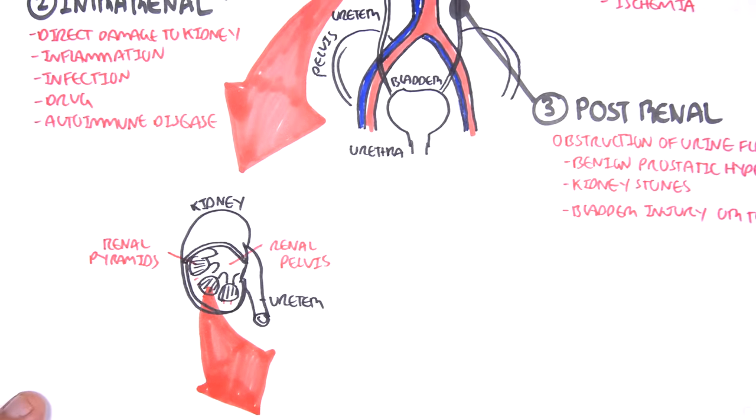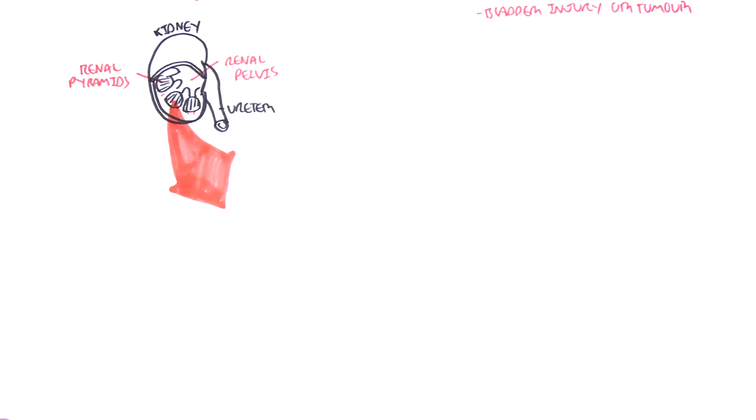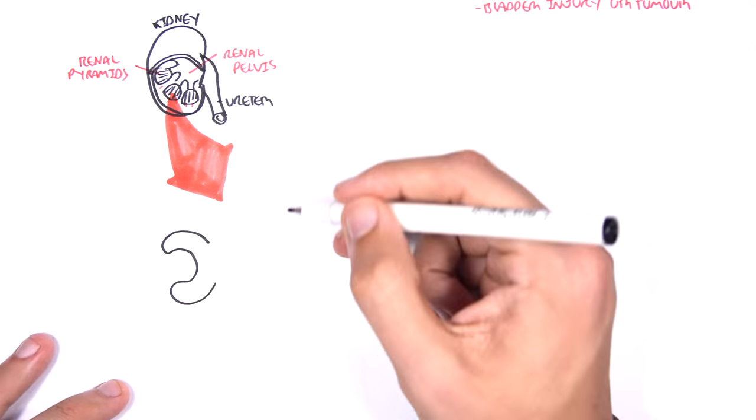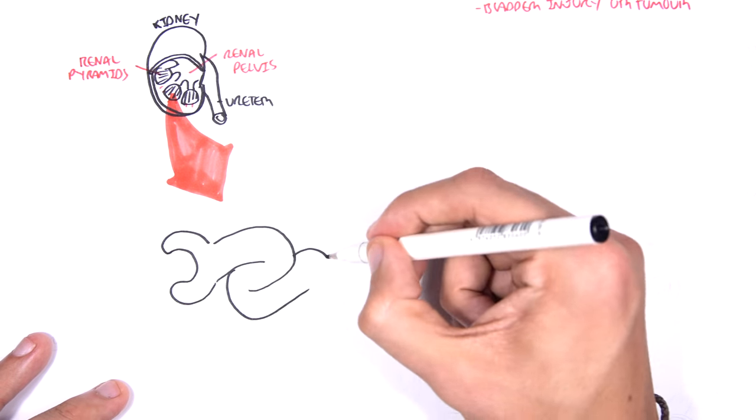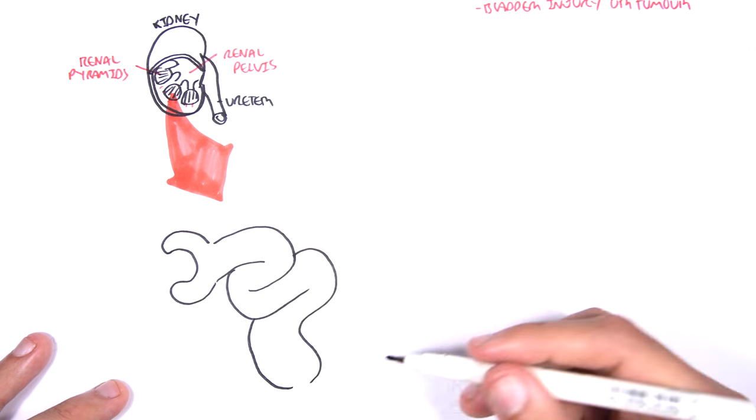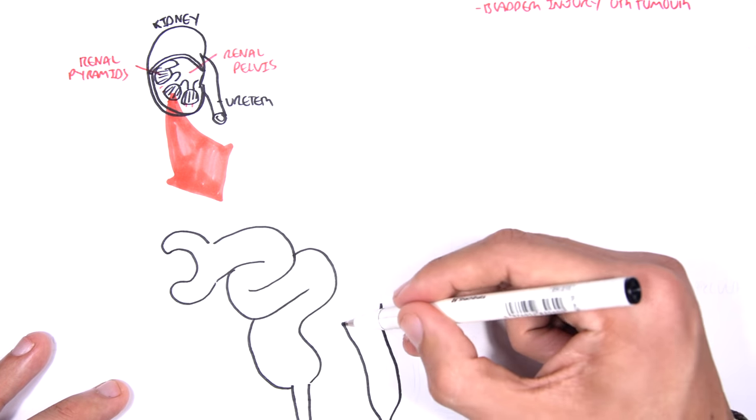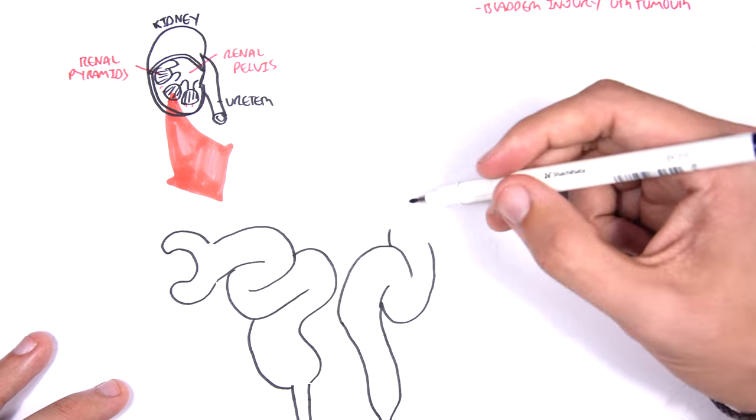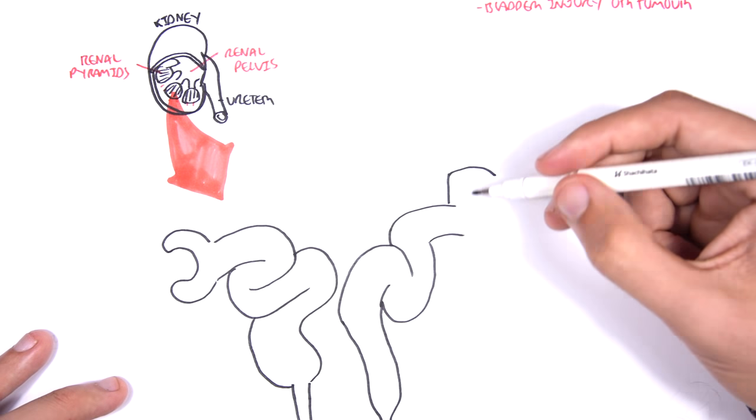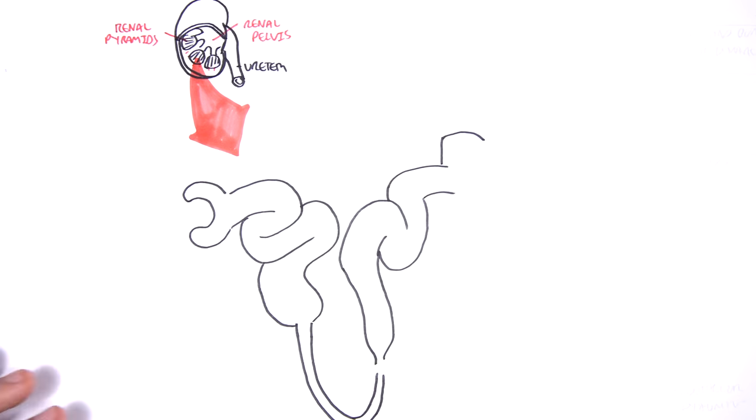So, let's just zoom into one of these nephrons. Here I'm drawing one nephron. It has the head, which is the Bowman's capsule. And then we have this convoluted part called the proximal convoluted tubules, which then forms the loop of Henle. And then we have the distal convoluted tubules, and then the collecting ducts.